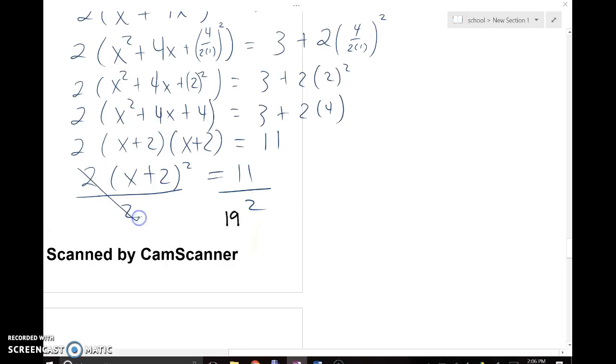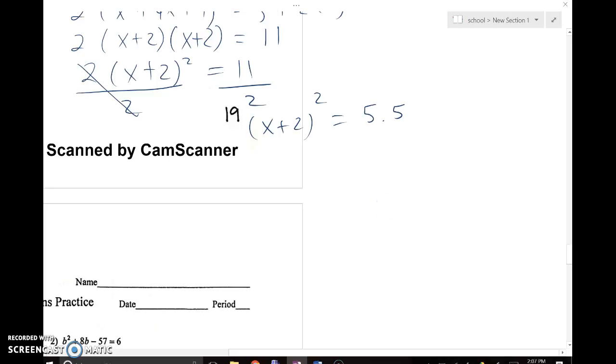These would cancel out on my left side, but I'm left with (x + 2) squared equals 5.5. Now I want to continue the solving process to make sure I get x by itself. I'm going to take the square root of both sides. (x + 2) squared and the square root of 5.5. These cancel, and I'm just left with x + 2 equals plus or minus.